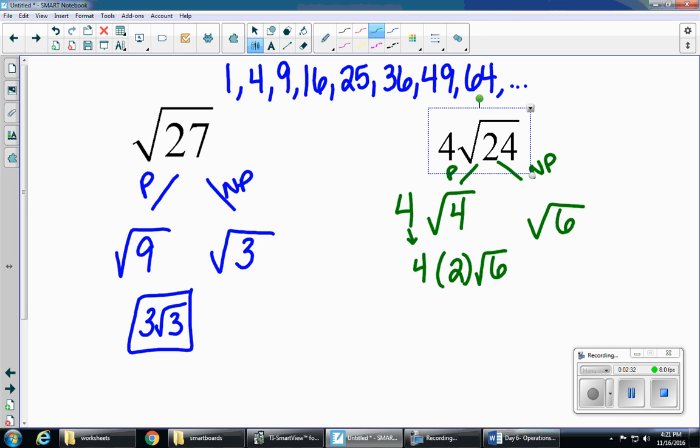But I still have this four on the outside, so I'm gonna bring that down as well. And now my last step is to do four times two, which gives me eight. So we have eight radical six, and that's how you simplify radicals.